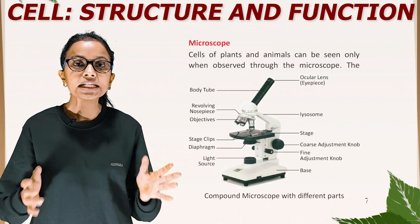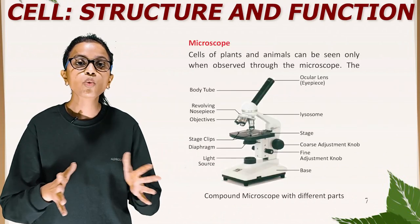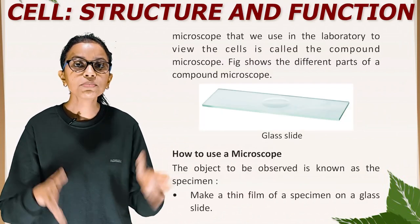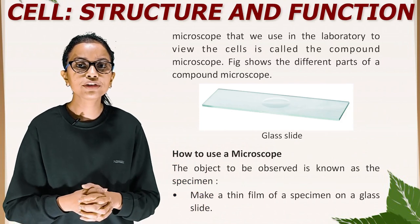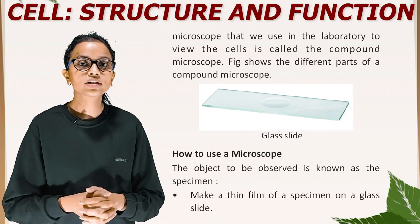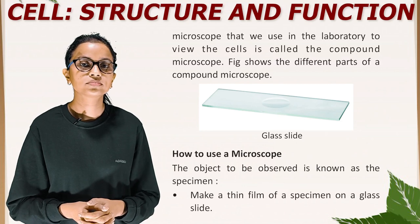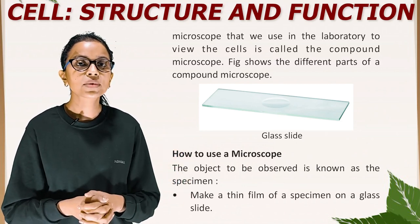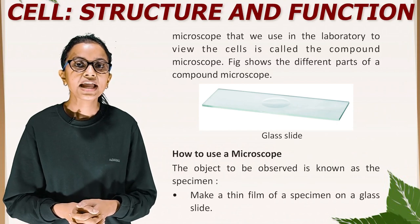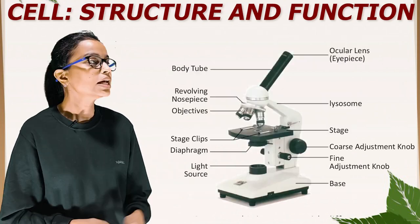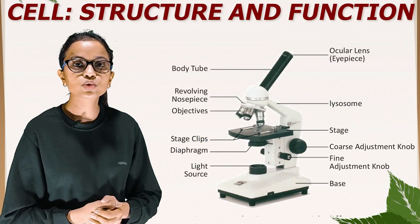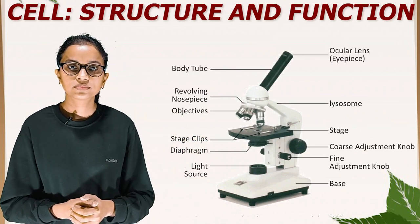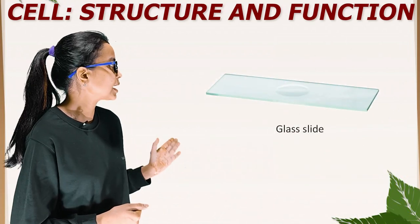Microscope. Cells of plants and animals can be seen only when observed through the microscope, as we all know. The microscope that we use in the laboratory to view cells is called the compound microscope. The figure shows the different parts of the compound microscope. This is the picture of a glass slide, and this is the picture of a compound microscope showing its different parts.